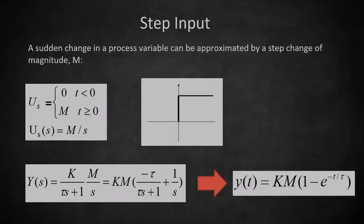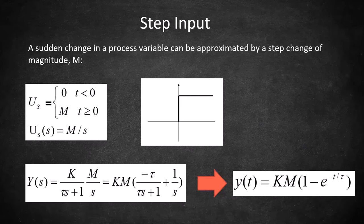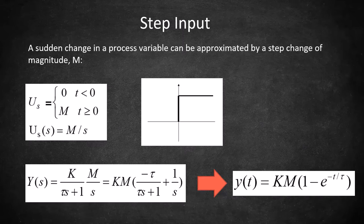First is our step input. A step input is a sudden change in a process variable that can be approximated by just a step change of magnitude m, as shown in the graph here.